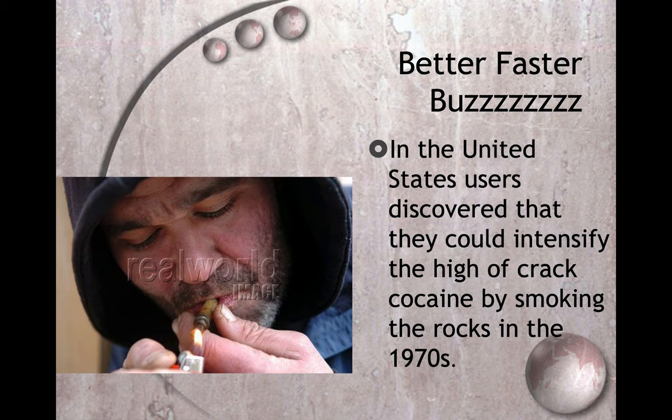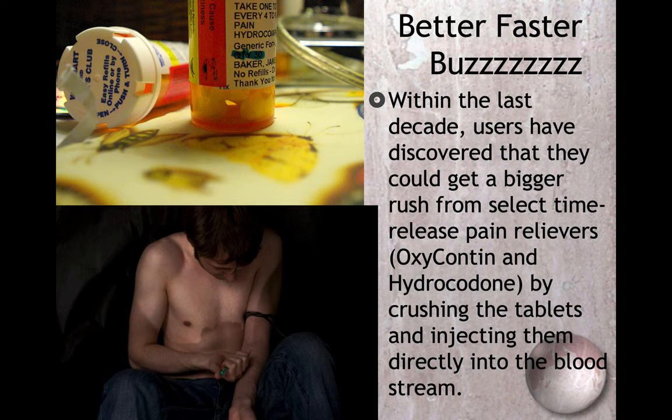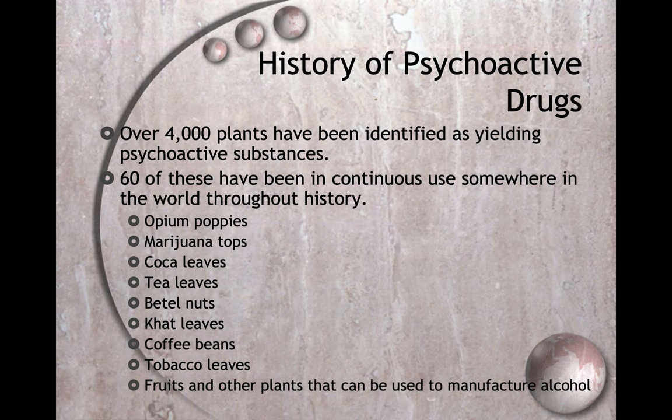In the United States, users discovered they could intensify the high of crack cocaine by smoking the rocks in the 1970s. Within the last decade, users discovered they could get a bigger rush from select time-release pain relievers such as oxycontin and hydrocodone by crushing the tablet and injecting it directly into the bloodstream.